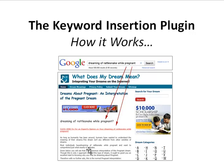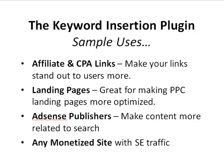A few sample uses of the plugin: if you do affiliate marketing or cost-per-action (CPA) marketing, you can make your affiliate text links stand out a lot more. Anyone that comes from a search engine — you can dynamically insert whatever they typed right into your affiliate links, helping those people click through your affiliate landing page to the affiliate offer, where you can get more conversions.